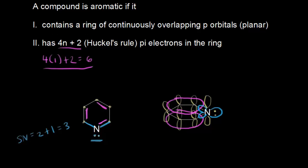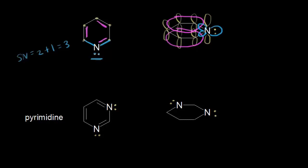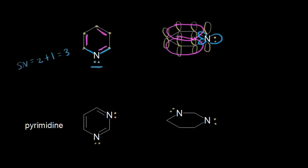We've seen that pyridine is aromatic. Let's do an example that's similar — this is pyrimidine. Starting with the carbons: each of the four carbons is connected to a double bond, so each is sp2 hybridized. I can sketch in a p orbital on each sp2 hybridized carbon. Studying the nitrogens in pyrimidine, it's the exact same situation as in pyridine — a sigma bond here, a sigma bond here, and a lone pair of electrons, so this nitrogen is sp2 hybridized with a free p orbital. I'll draw in the p orbital on that nitrogen.